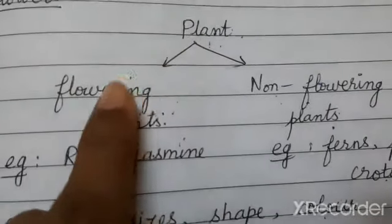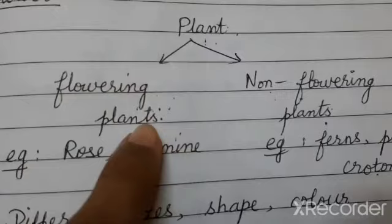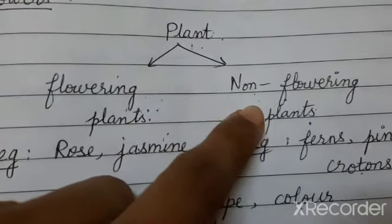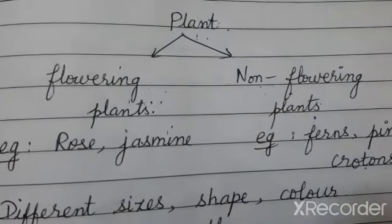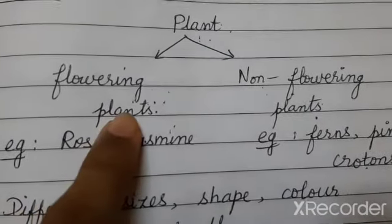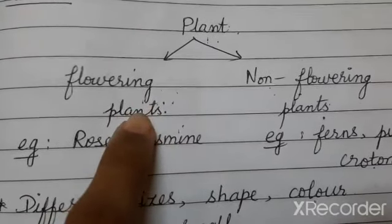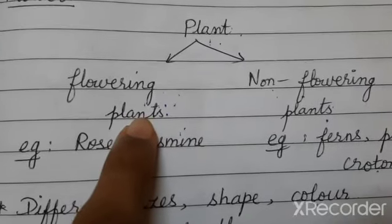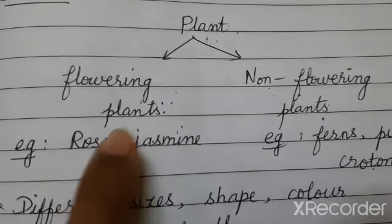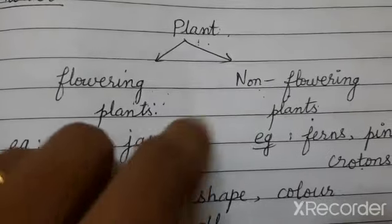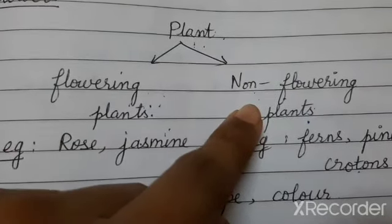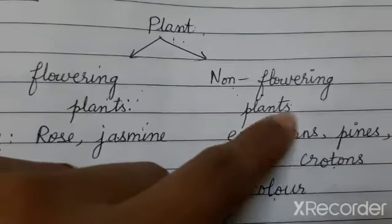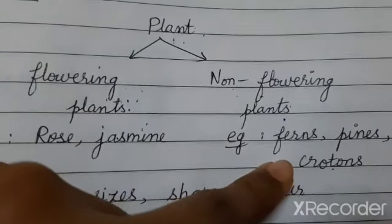Plants which give flowers are called flowering plants. Those which do not give flowers are non-flowering plants. Certain plants have the potential to produce flowers — for example, rose and jasmine. There are certain plants which cannot produce flowers, for example, ferns, pines, and crotons.